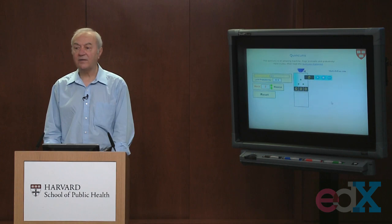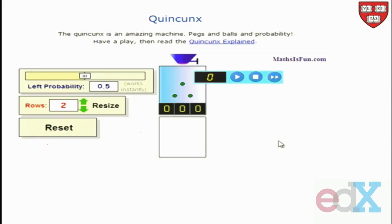So let's go back to our quincunx. A slightly more complicated quincunx, we've put in two rows. So now, let's roll it. Now we see the ball first bounces on the top peg and then on a peg in the second row.